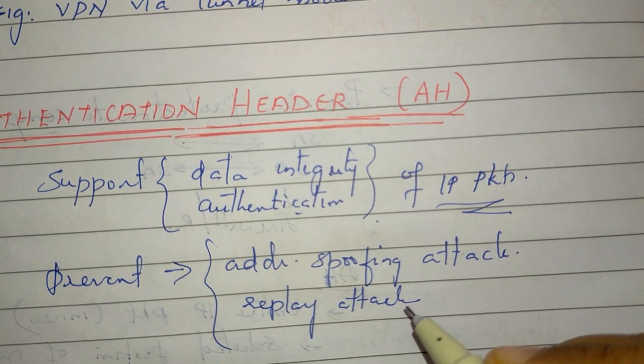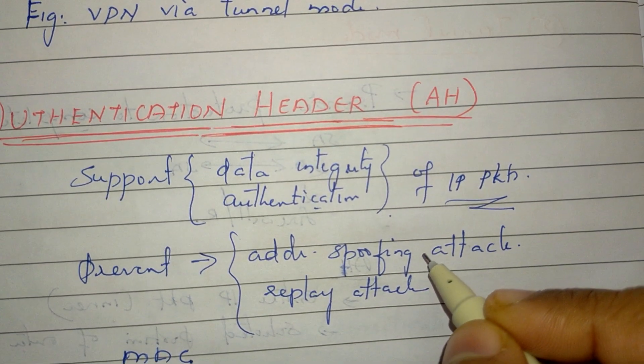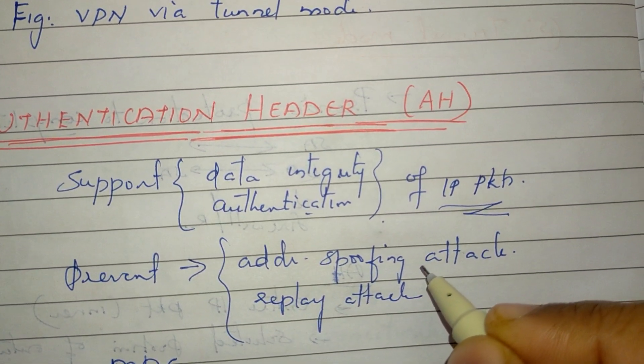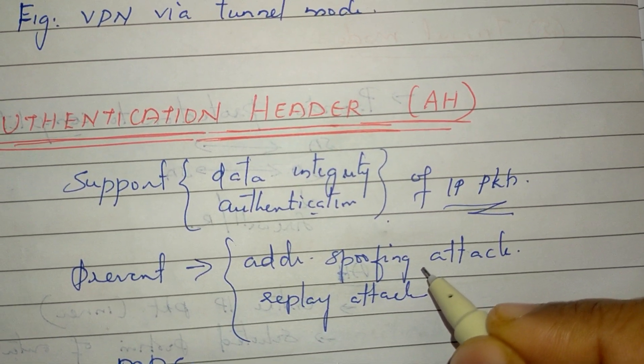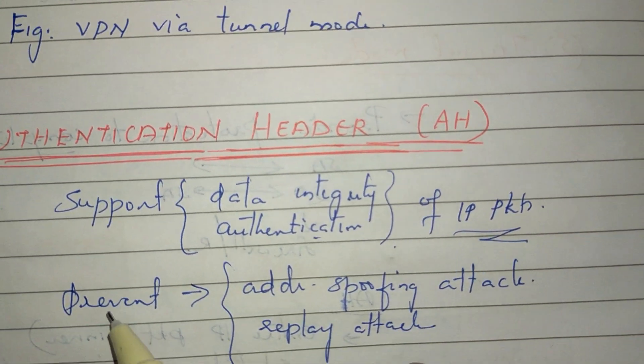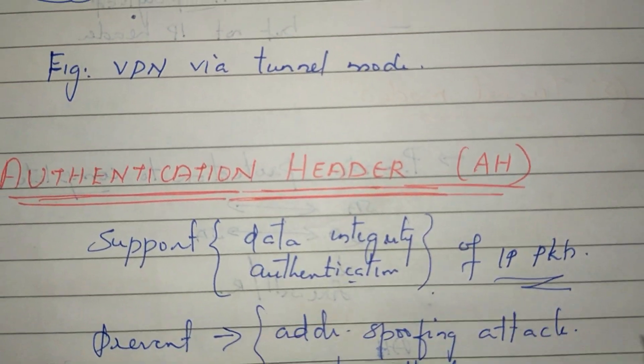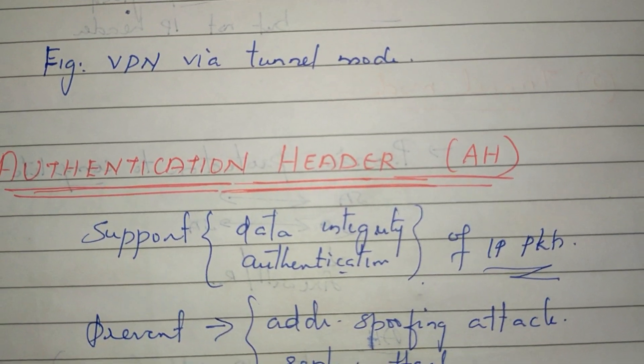The address spoofing attack is called the address spoofing attack. This is the false IP address provided in the packet. What do we need to do with these random attacks? Eliminate them.